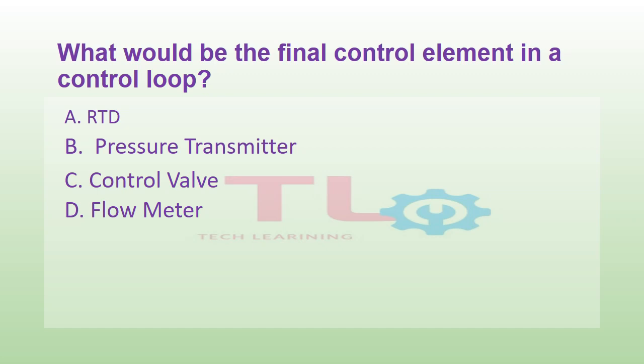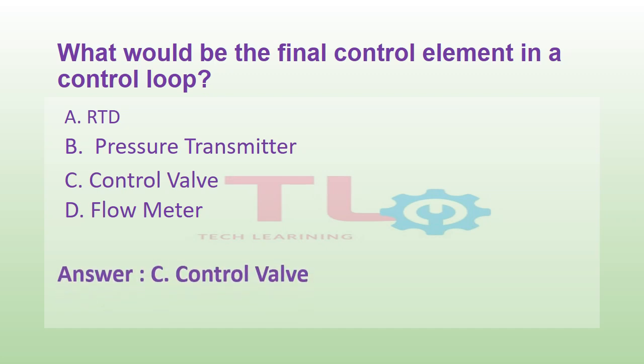What would be the final control element in a control loop? Option A: RTD. Option B: pressure transmitter. Option C: control valve. Or option D: flowmeter. And the answer is option C, control valve.